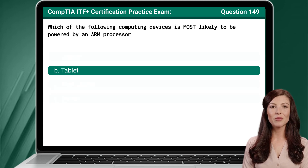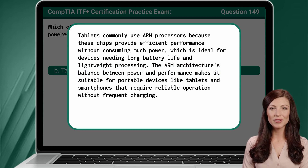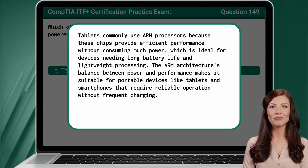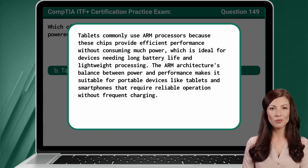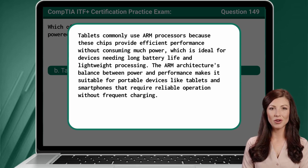The answer is B: Tablet. Tablets commonly use ARM processors because these chips provide efficient performance without consuming much power, which is ideal for devices needing long battery life and lightweight processing. The ARM architecture's balance between power and performance makes it suitable for portable devices like tablets and smartphones that require reliable operation without frequent charging.